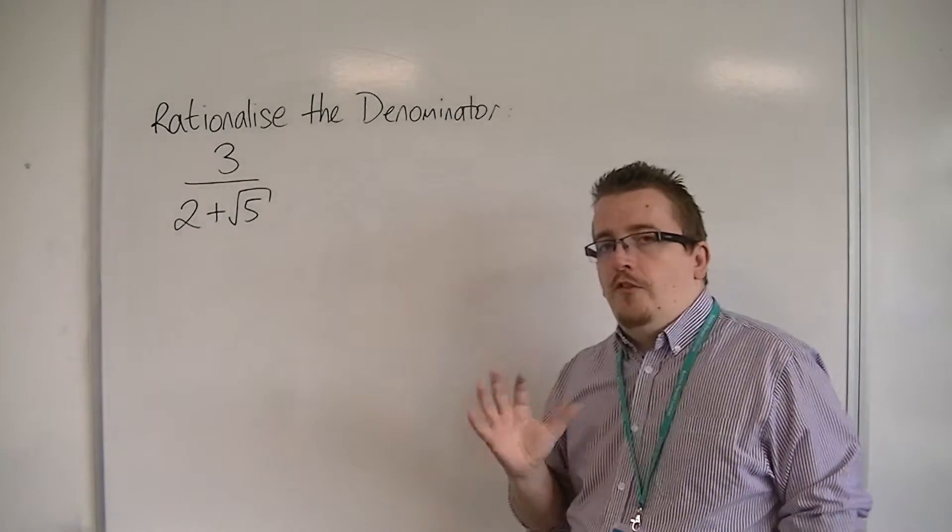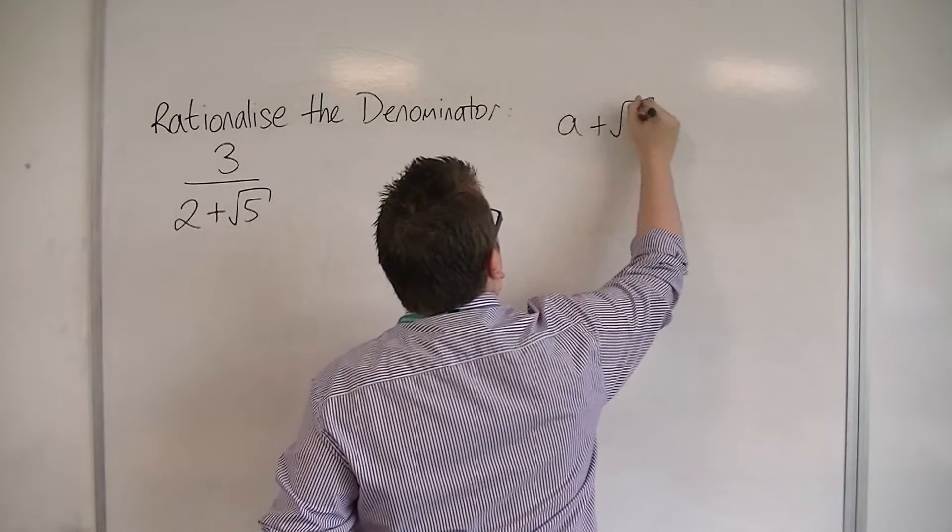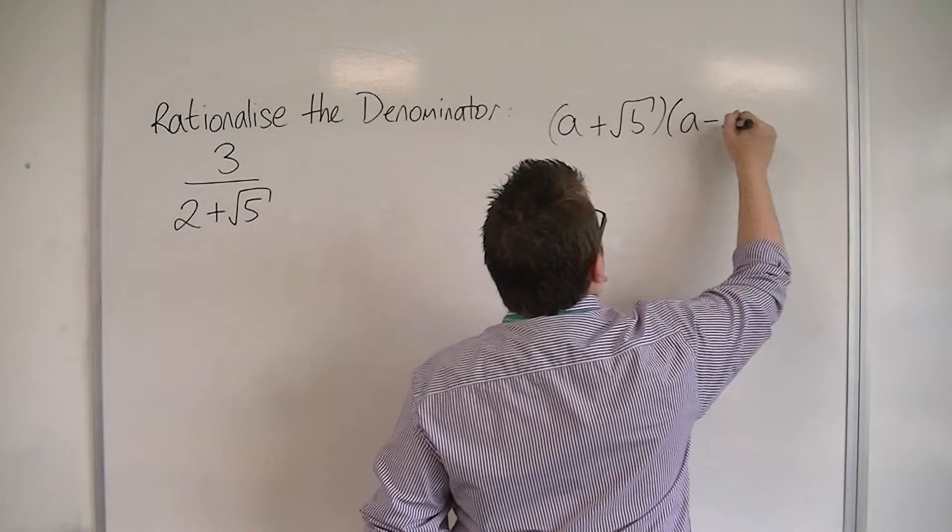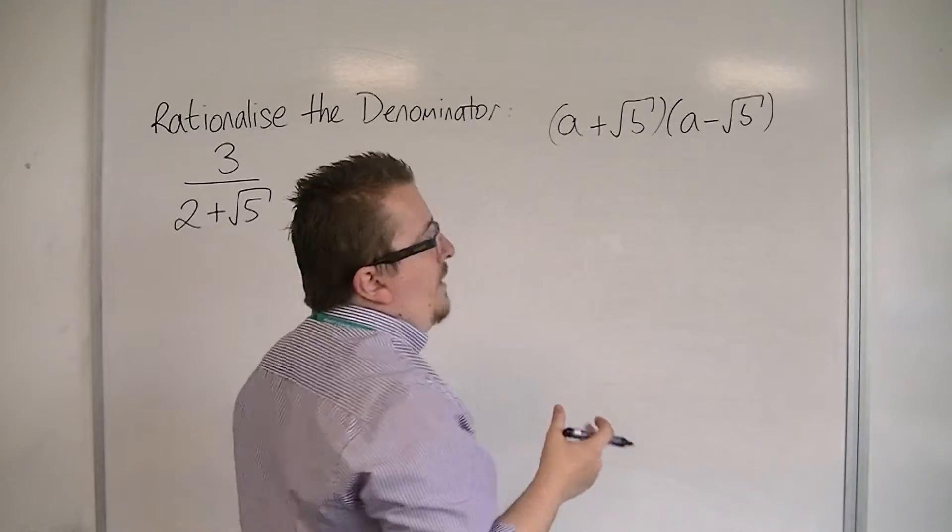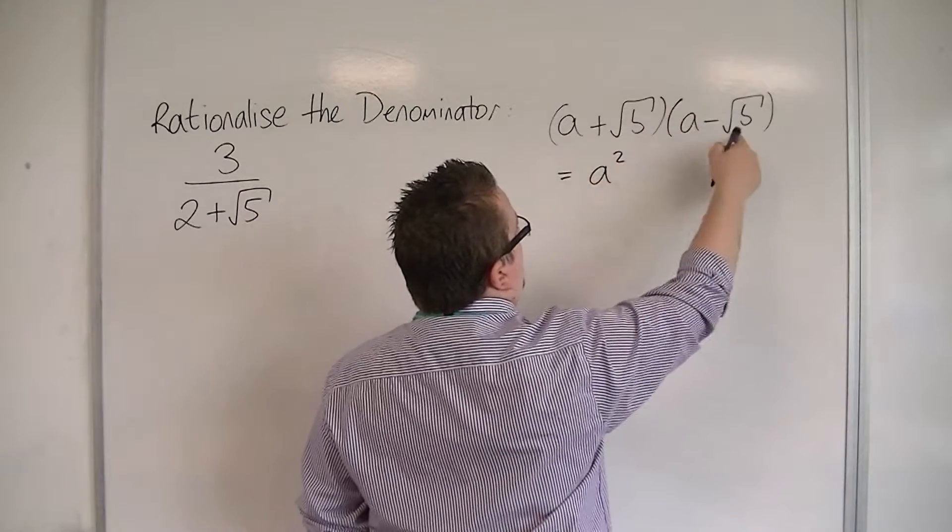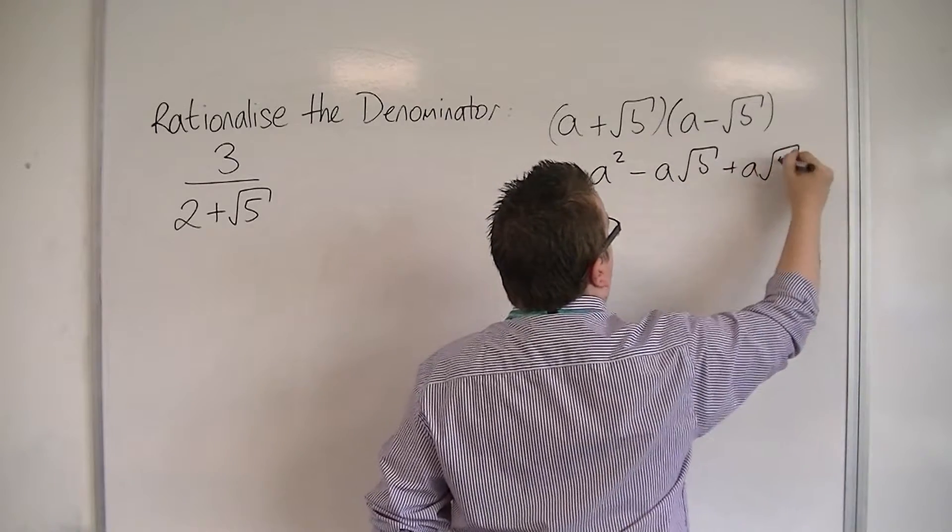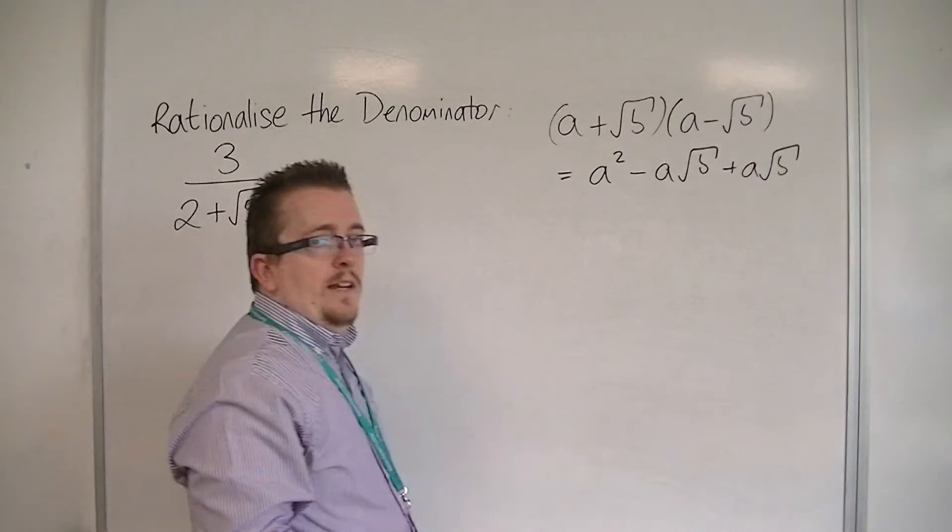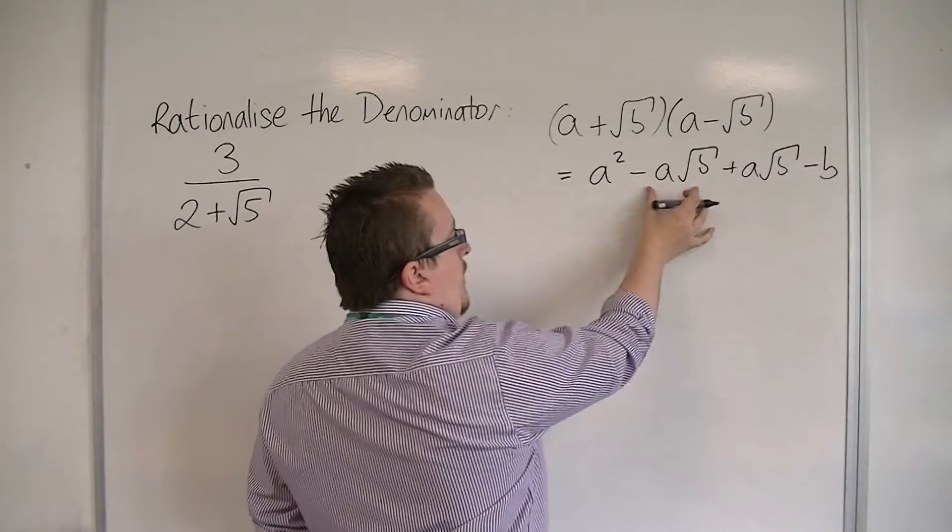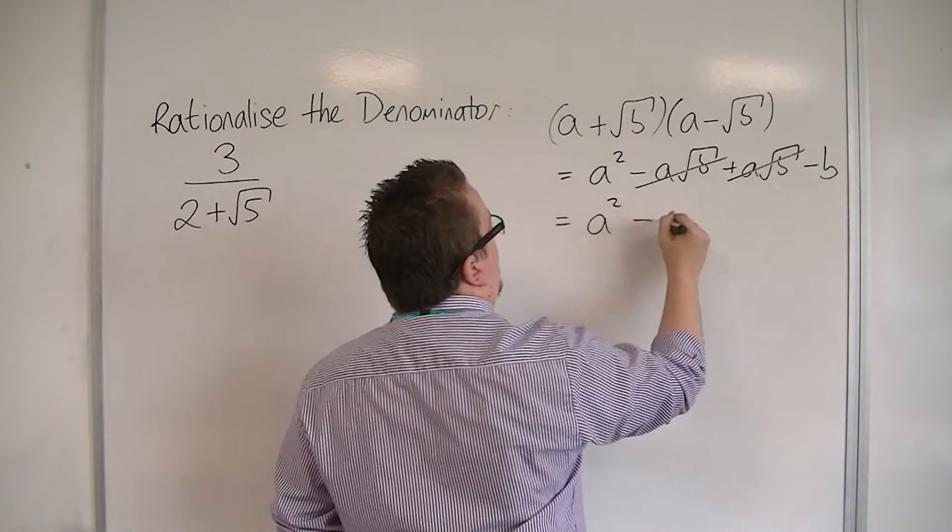Now, what I'm going to refer back to here is if we looked at a plus root b, and then I multiplied that by a minus root b, what I get is a times a, which is a squared. I get a times minus root b, so minus a root b. I get a times root b, so plus a root b, and then I get root b times minus root b, which would be minus b. So the minus a root b and the plus a root b cancel each other out, and I'm left with a squared minus b.